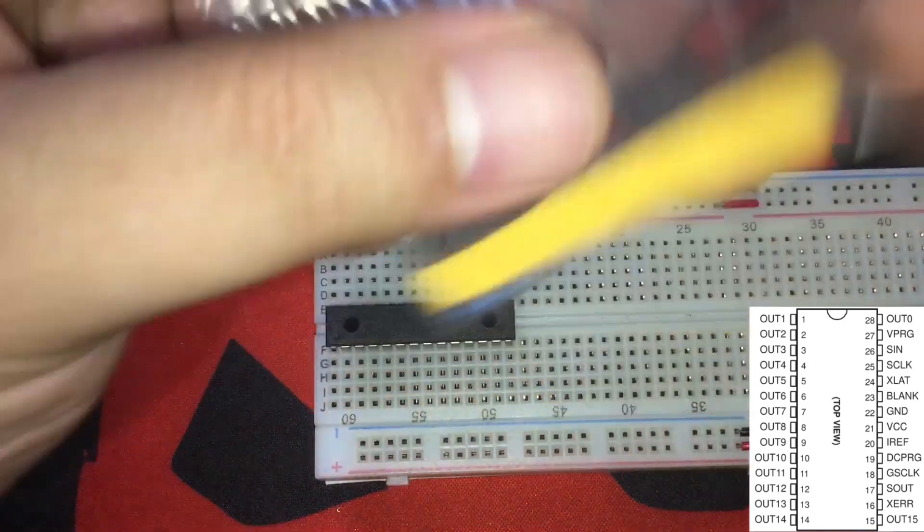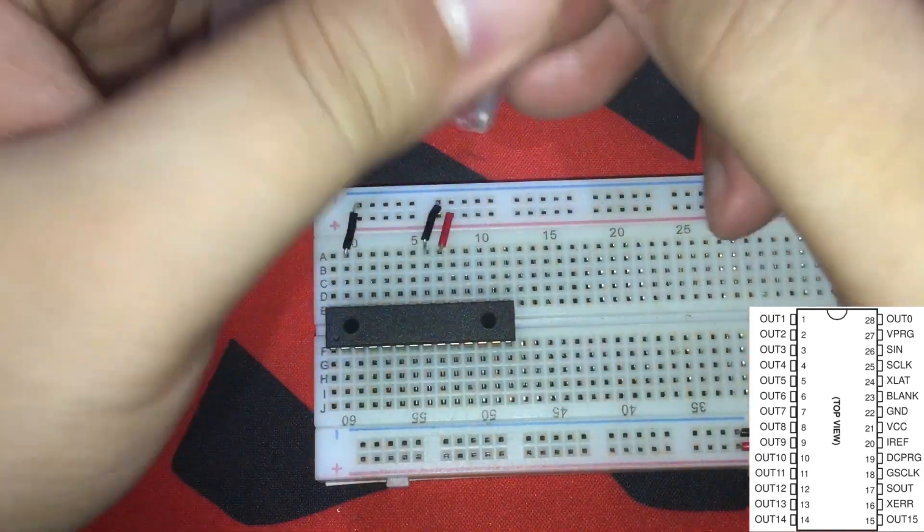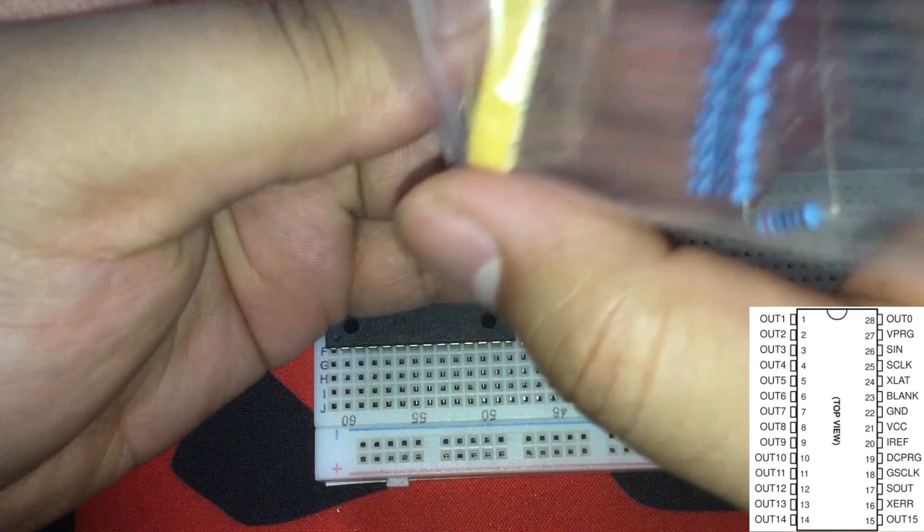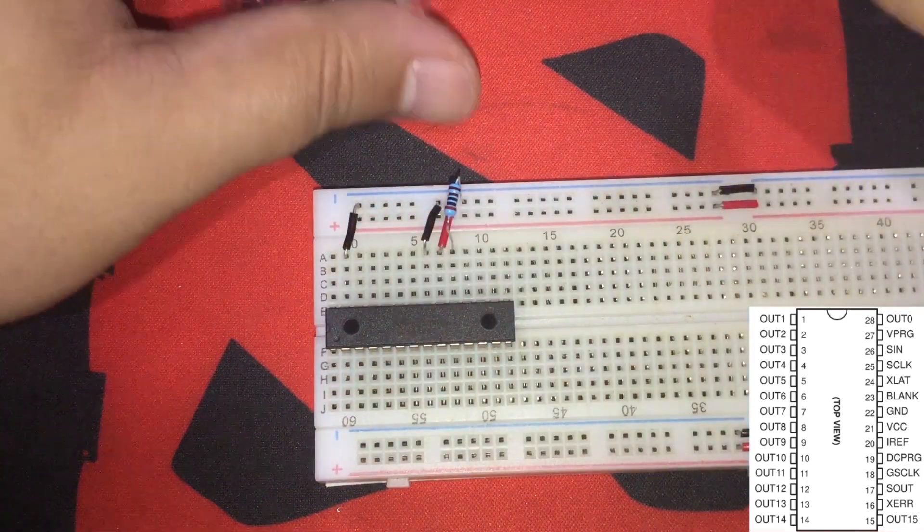IC pin number 21 is VCC. IC pin number 20 is the IRF. We should have a grounded resistor. Here it is. 2K ohms. Okay, connect the resistor from pin number 20 to ground, just like that.